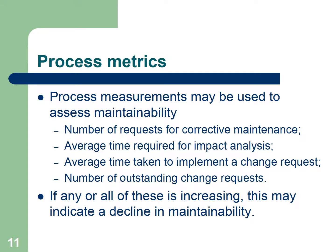Complexity metrics include: complexity of control structure, complexity of data structure, object method procedure and module size. Process metrics measurement may be used for assessment, including: number of requests for corrective maintenance, average time required for impact analysis, average time taken to implement a change request, and number of outstanding change requests. If any of these are rising, this may indicate difficulty in maintaining the system.